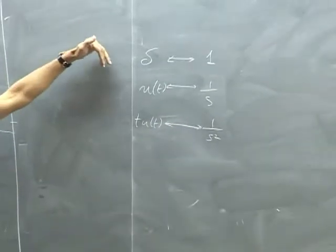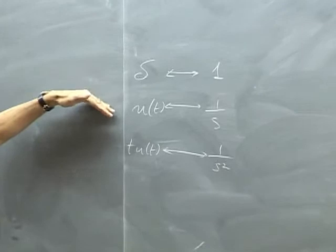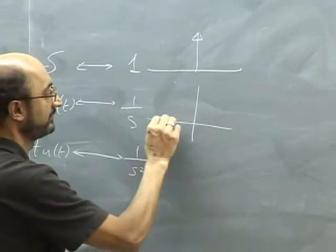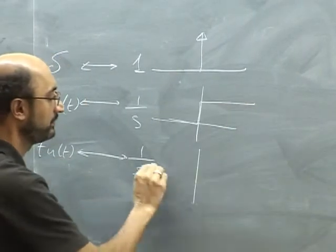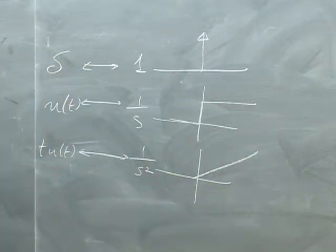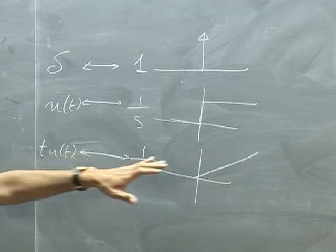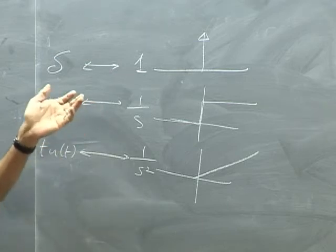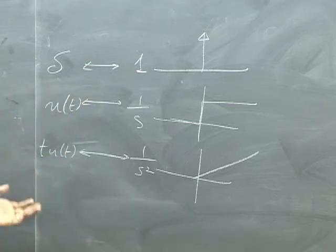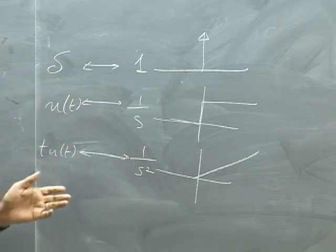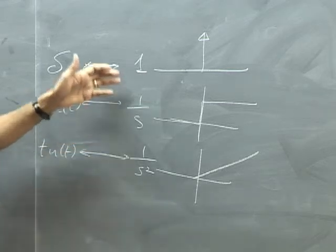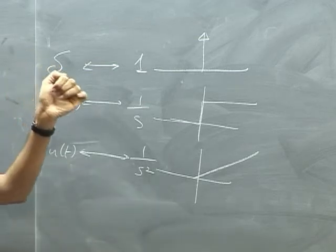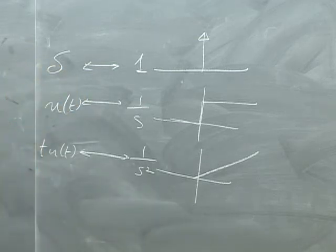The unit step is the integral of the delta. The delta looks like this, the unit step looks like that, and the ramp looks like this. This is the integral of that. We're multiplying by 1 over s — dividing by s each time — and we get these three. Similarly, to differentiate we multiply by s each time: differentiate ramp, we get unit; differentiate unit, we get delta. So those three you get more or less for free.